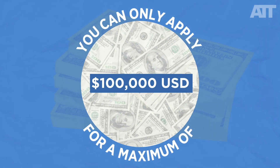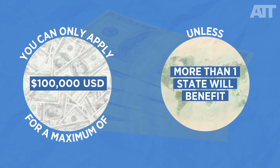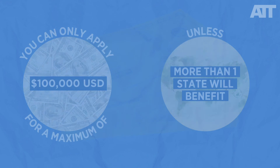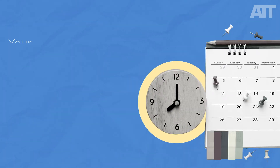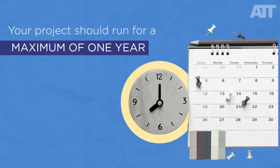When planning your project, please also remember that you can only apply for a maximum of 100,000 US dollars, unless more than one state will benefit from the project. Also, your project should run for a maximum period of one year. You can always apply for another project at a later stage.